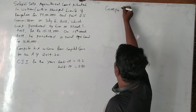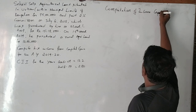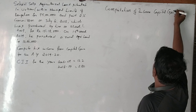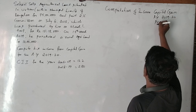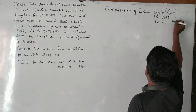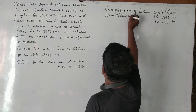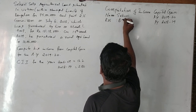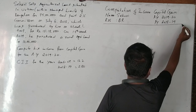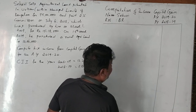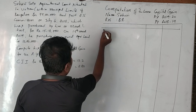Let us take the pro forma for computation of income from capital gains. Our assessment year is 2019-20, and our previous year is 2018-19. The name of the assessee is Shri Hari and his residential status is ordinary resident. This is the format we generally use while solving questions across all chapters. Now let us take the sale price.